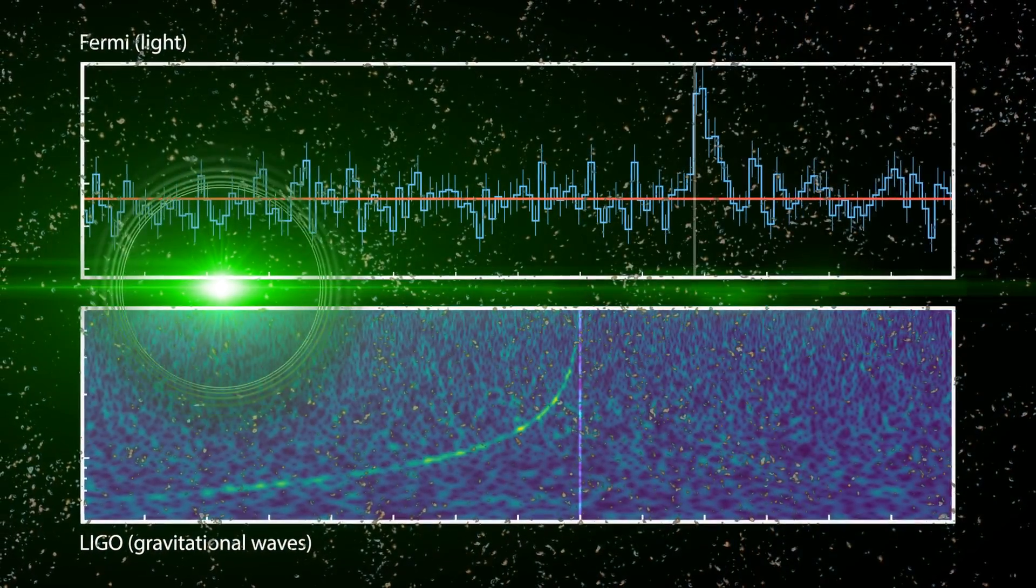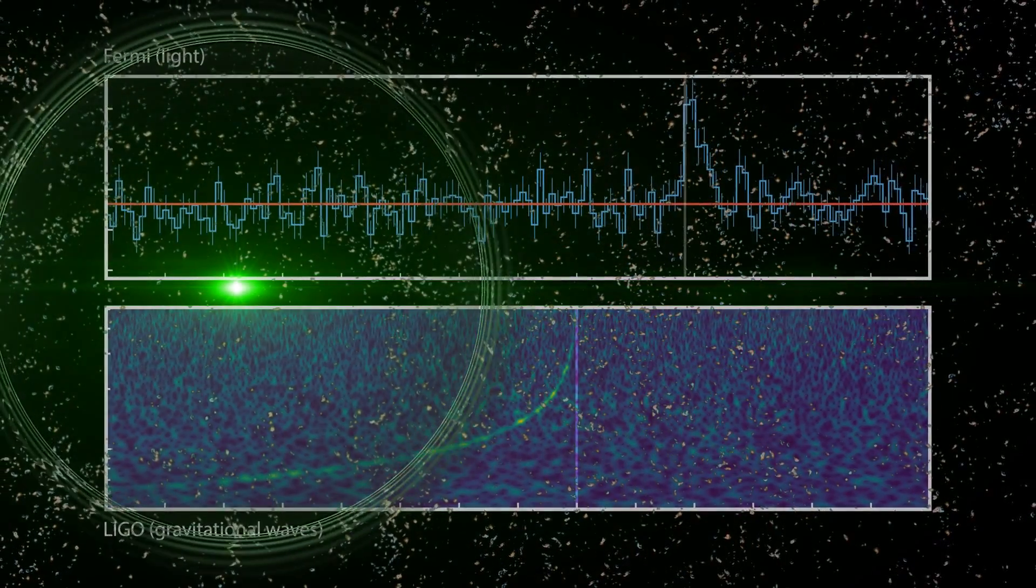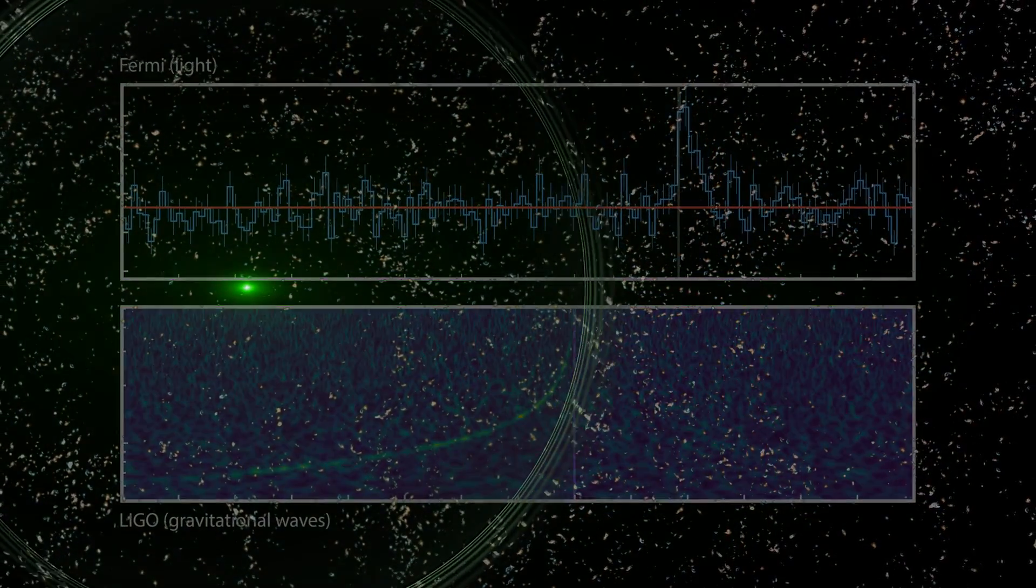Researchers quickly realized these two fundamentally different types of waves could have come from a single neutron star merger. If so, it was critical to identify exactly where this had taken place in the sky, and if the explosion could be seen by other telescopes.